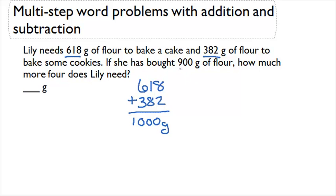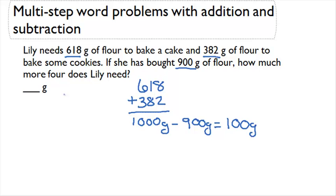Now if she already has 900 grams of flour, how much more does she need? Well, let's find the difference between 1000 and 900. If we subtract 900 grams from 1000 grams, we're going to end up knowing that she still needs another 100 grams.